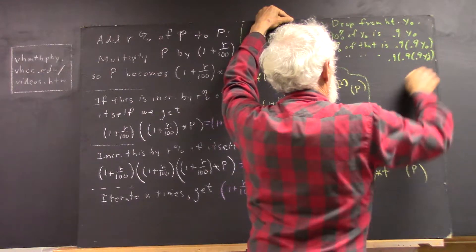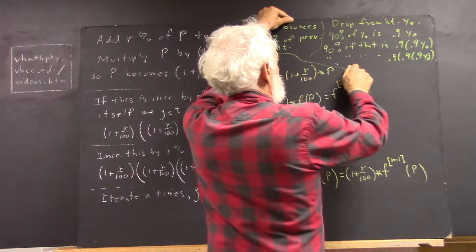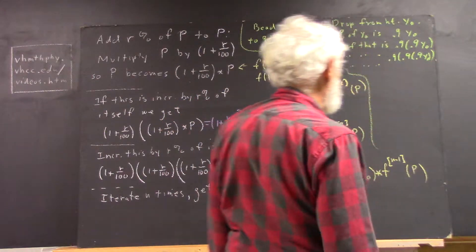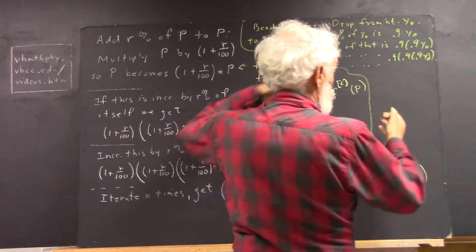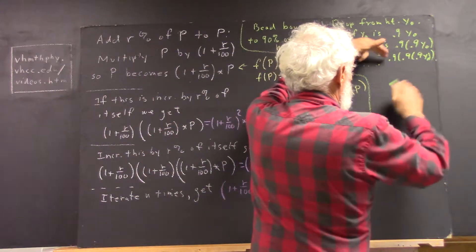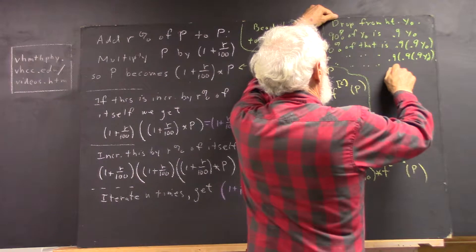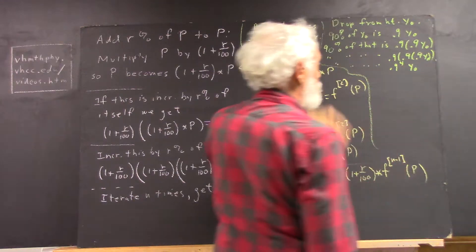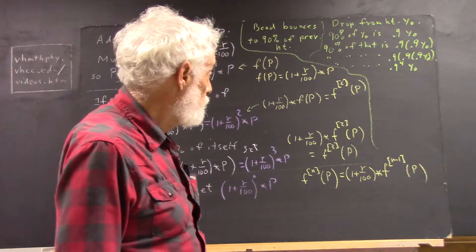And 90% of that is what? Well, I'm getting tired of writing out those 0.9's. I don't want to write out four of them, but it's going to be 0.9 times this. But I can write that as 0.9 to the fourth times why not.